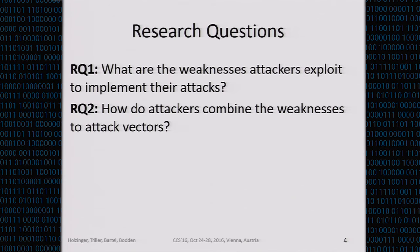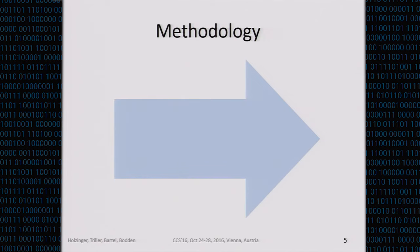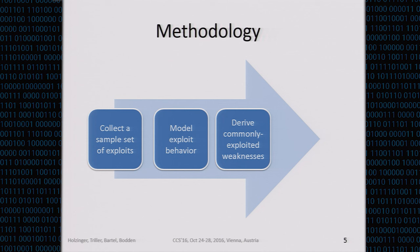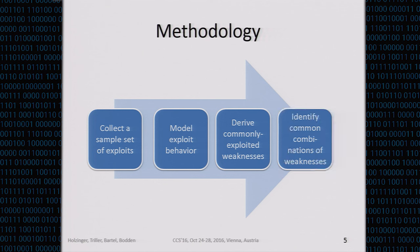Specifically, we sought to address two research questions: number one, what are the weaknesses attackers exploit to implement their attacks? And number two, how do attackers combine the weaknesses to attack vectors? For that, we applied a four-step process: first, collect exploits with a broad sample set; then model exploit behavior in a way that allows us to draw meaningful conclusions; derive commonly used weaknesses; and look at how attackers combine those weaknesses to implement full attacks.